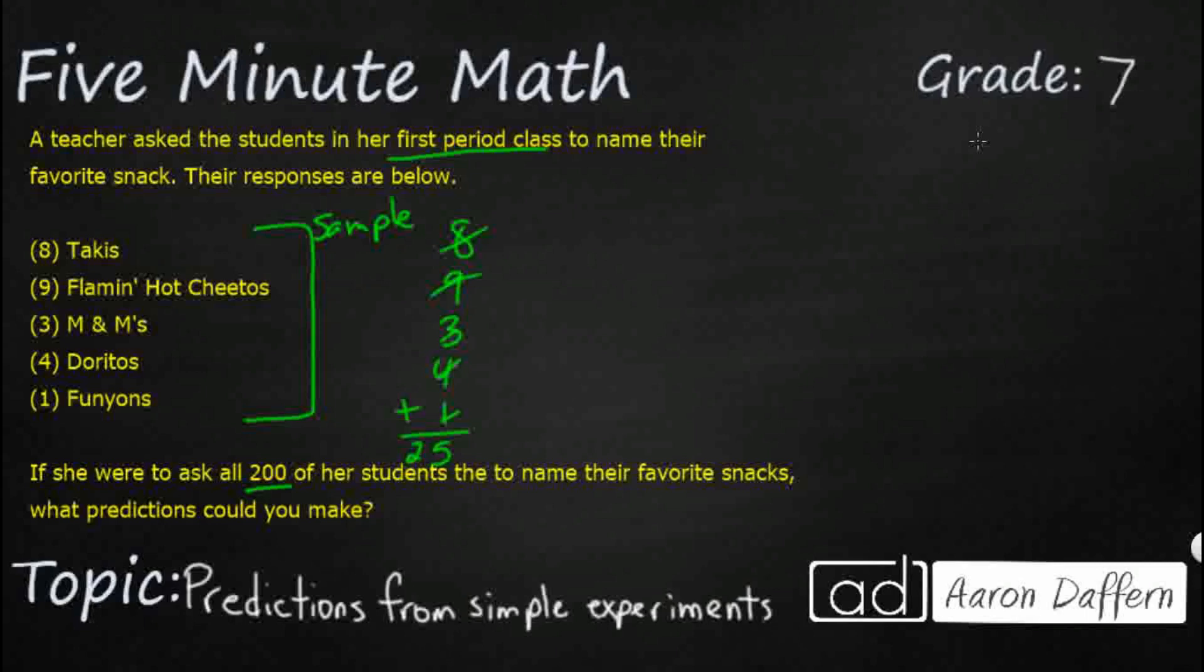So what kind of predictions can we make? Well we can always predict about, it's not going to be 100% positive until we ask all 200, but about how many students would choose, and then look at these answers. So let's take Takis for example. If we want to make a prediction about how many out of the 200 students would choose Takis, well let's make a proportion.